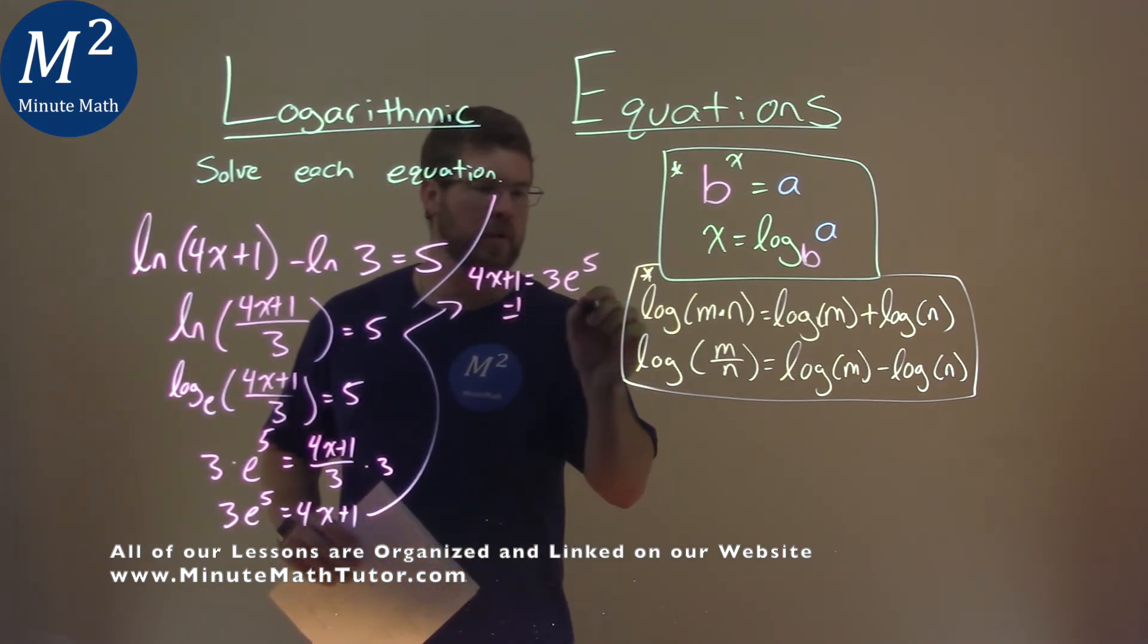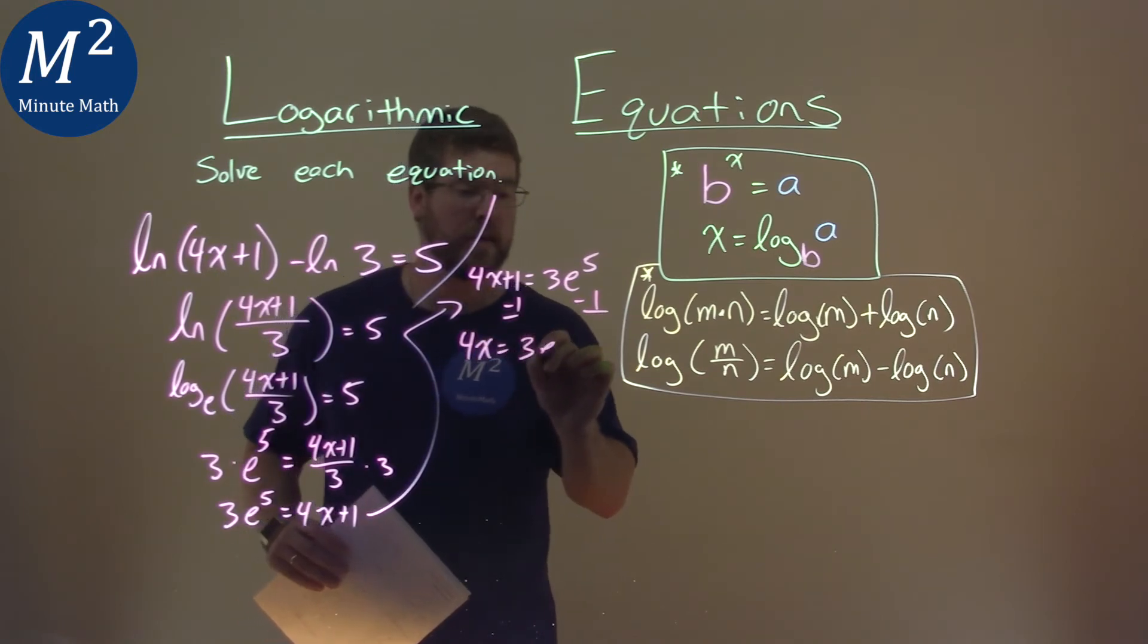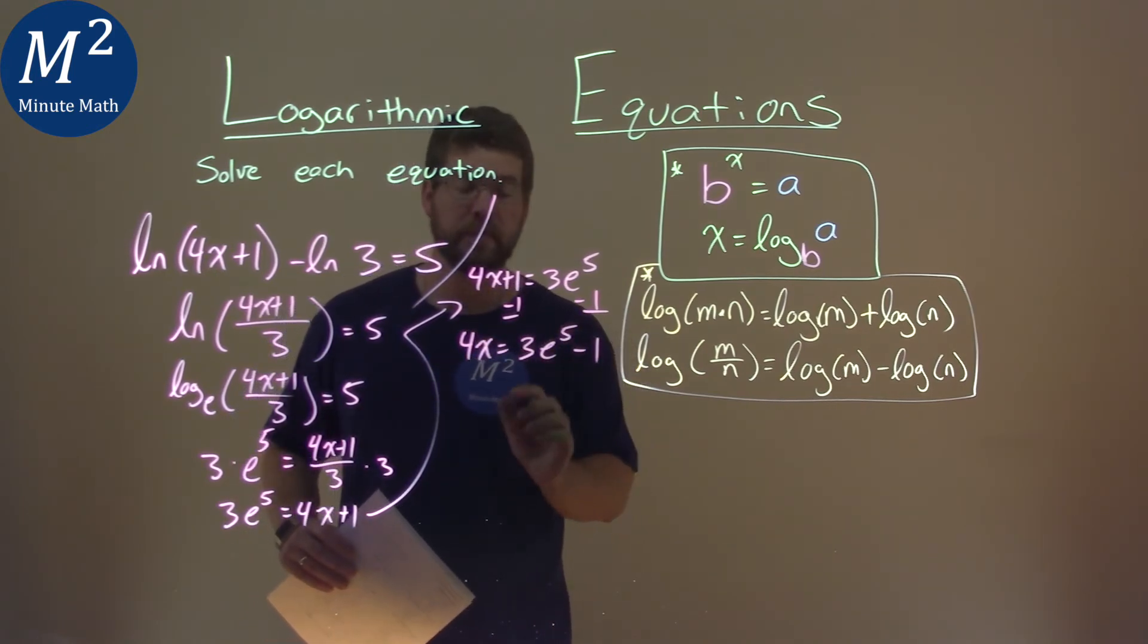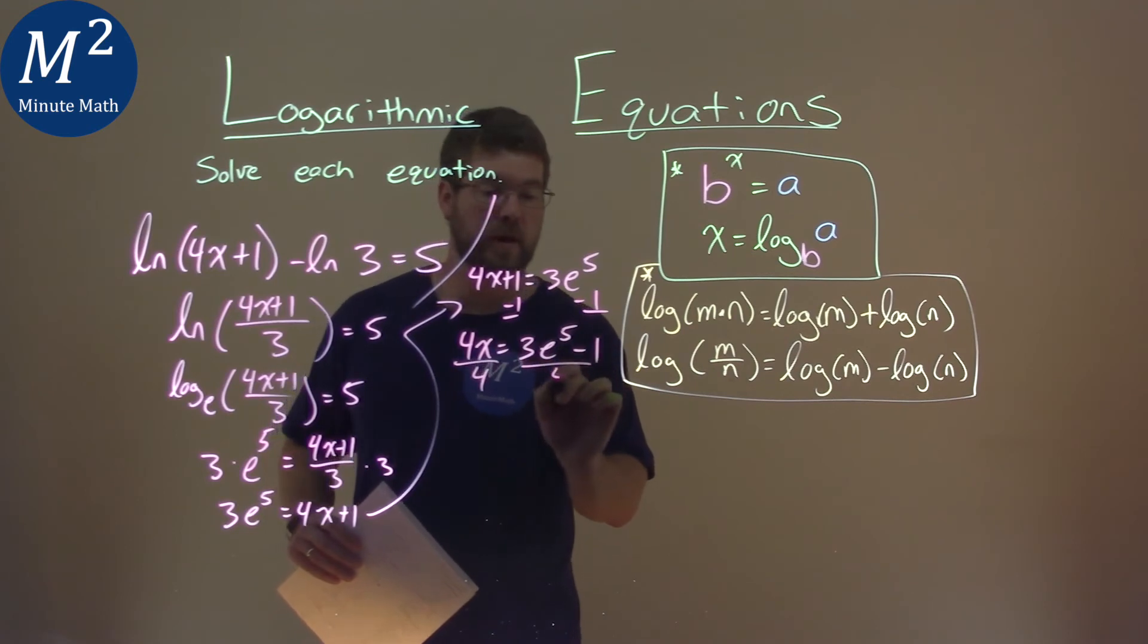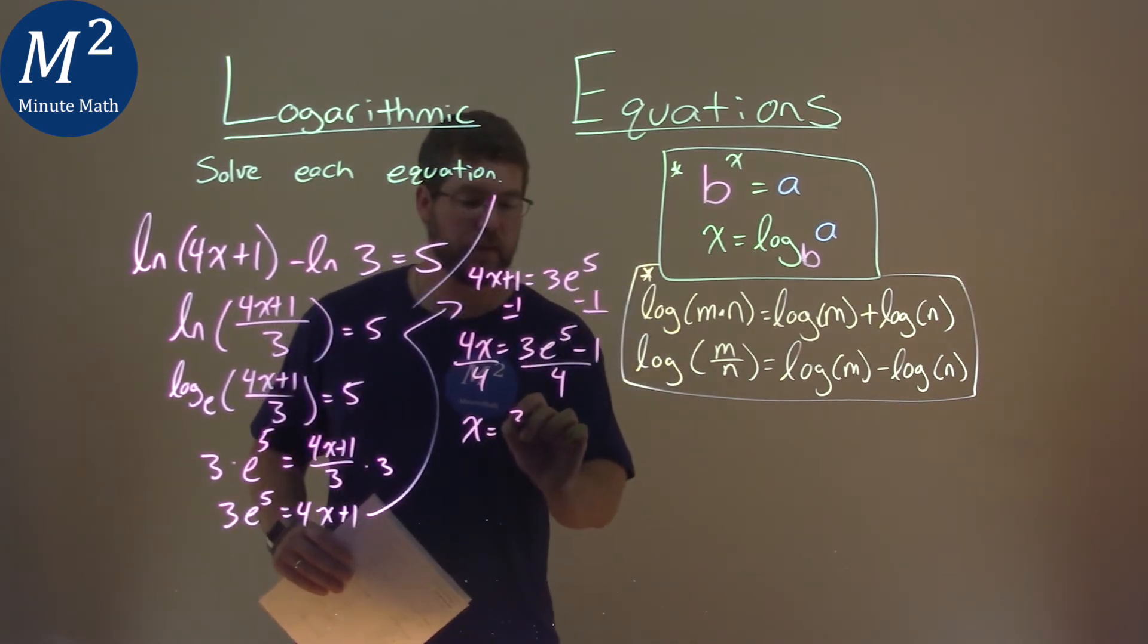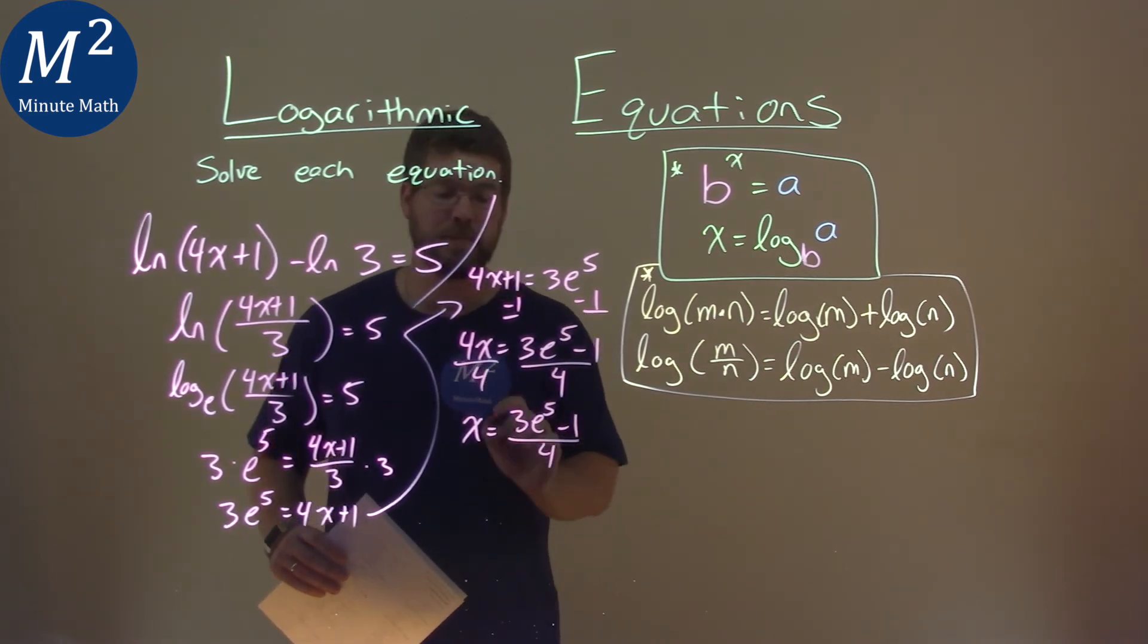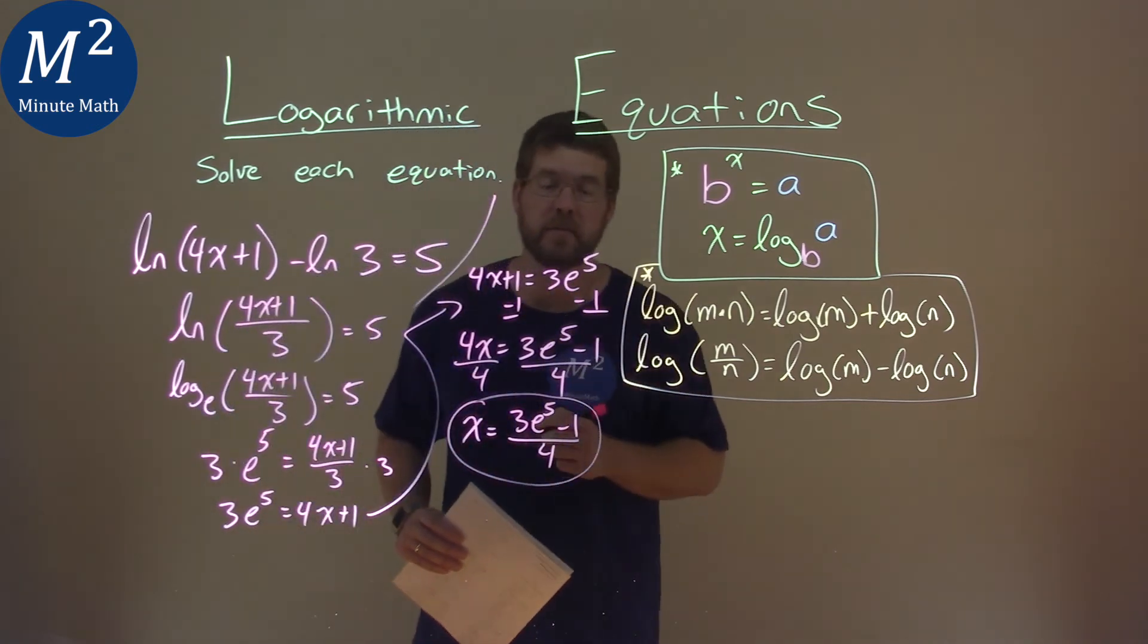So subtract 1 from both sides, and I have 4x now, equal to 3e to the 5th power minus 1. Divide both sides by 4. x is now by itself, which is our goal, and that's equal to 3e to the 5th power minus 1 over 4. And that is it. That is our final answer.